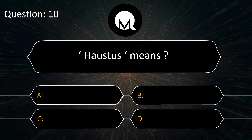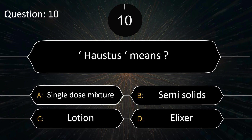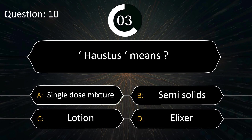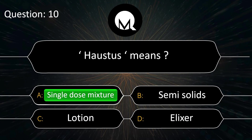Haustus means: single-dose mixture, semi-solids, lotion, or elixir? Answer is single-dose mixture. Note: Mistura is double-dose mixture.